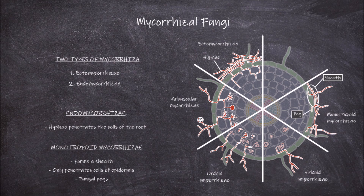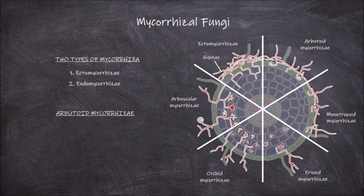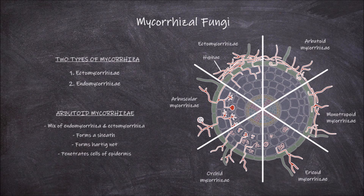The final type of mycorrhizae are the arbutoid mycorrhizae. This form is more of a mix of endomycorrhizae and ectomycorrhizae. It resembles ectomycorrhizae as it has a hyphal sheath and Hartig net, while it also resembles endomycorrhizae as it penetrates into the cells of the epidermis and forms coils within these cells.